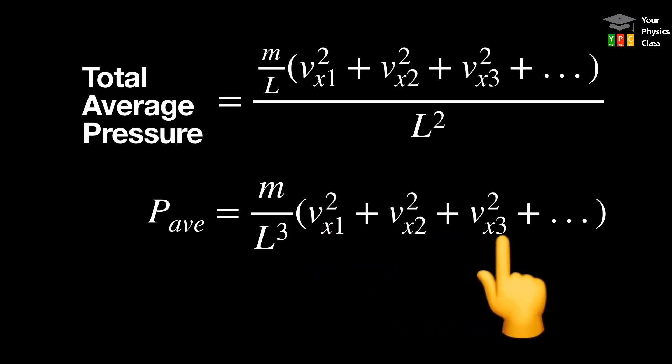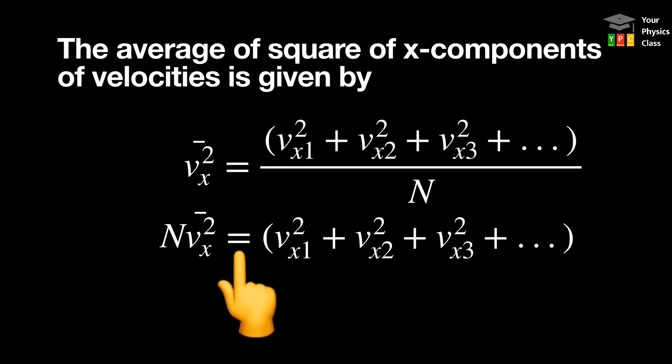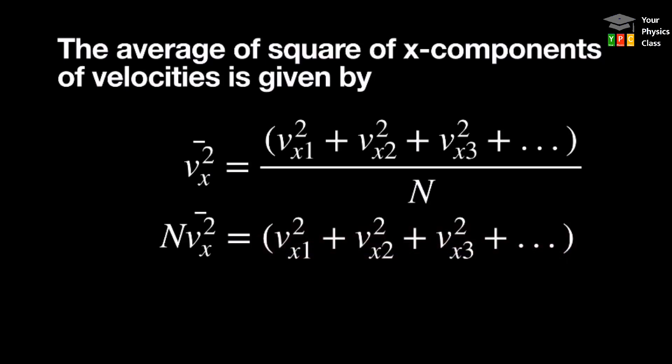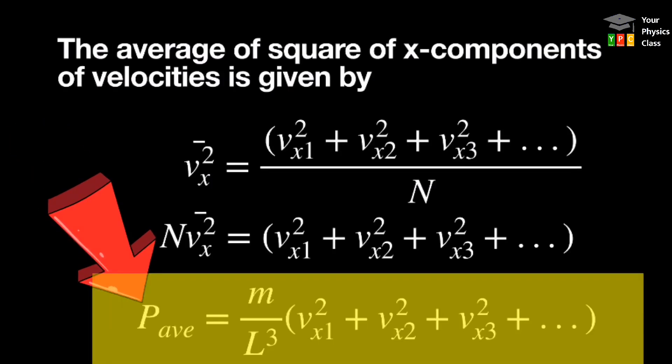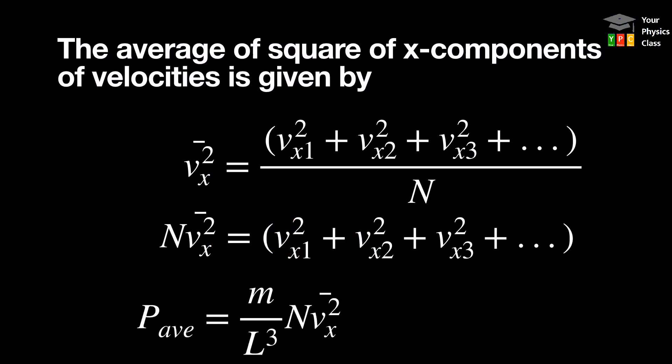Now look at this bracketed quantity. Ise chota banane ki liye ham average of square of x component of velocity lete hai which is given by. So modifying this equation we get n VX square is equal to VX1 square plus VX2 square plus VX3 square plus dot dot. Substituting this value of bracketed quantity in equation of average pressure. Step ko samjane ki liye average pressure ka equation mein dobara niche likh raha aur jaise substitute kare lije equation bana. So P average is equal to M by L cube times n VX square.